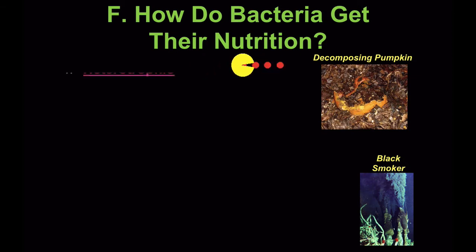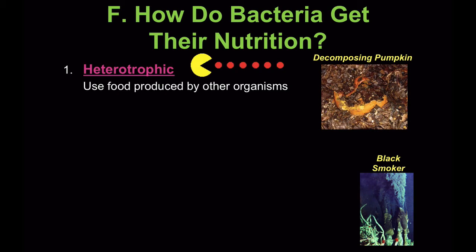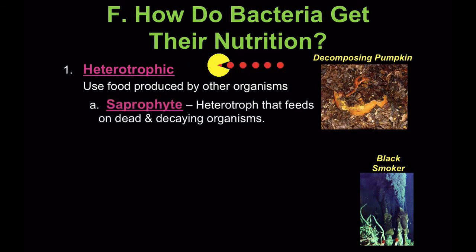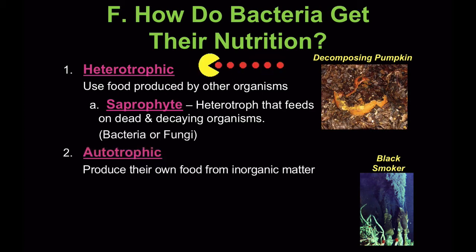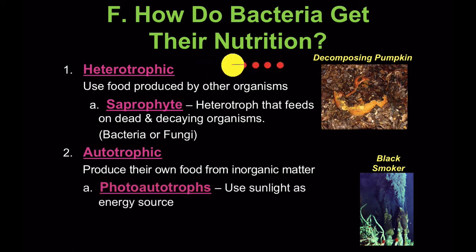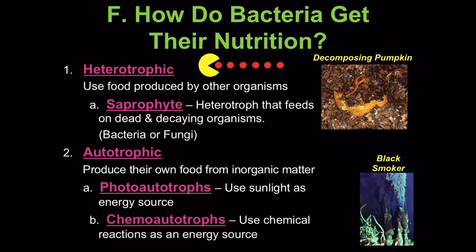So how do bacteria get nutrition? They could be heterotrophic, which means they use food produced by other organisms, like saprophytes, which feed on dead and decaying organisms. Or they can be autotrophic, meaning they produce their own food from inorganic matter. They could be photoautotrophs, which use sunlight as an energy source like a plant, or chemoautotrophs, which use chemical reactions as an energy source.